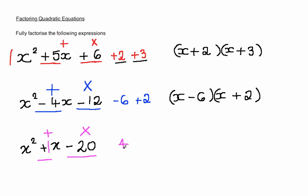These two numbers are 4 and 5. Because we want to make a plus 1 when we add them together, we have to have a minus 4 and a plus 5. Minus 4 times plus 5 gives you minus 20. Minus 4 plus plus 5 gives you plus 1.